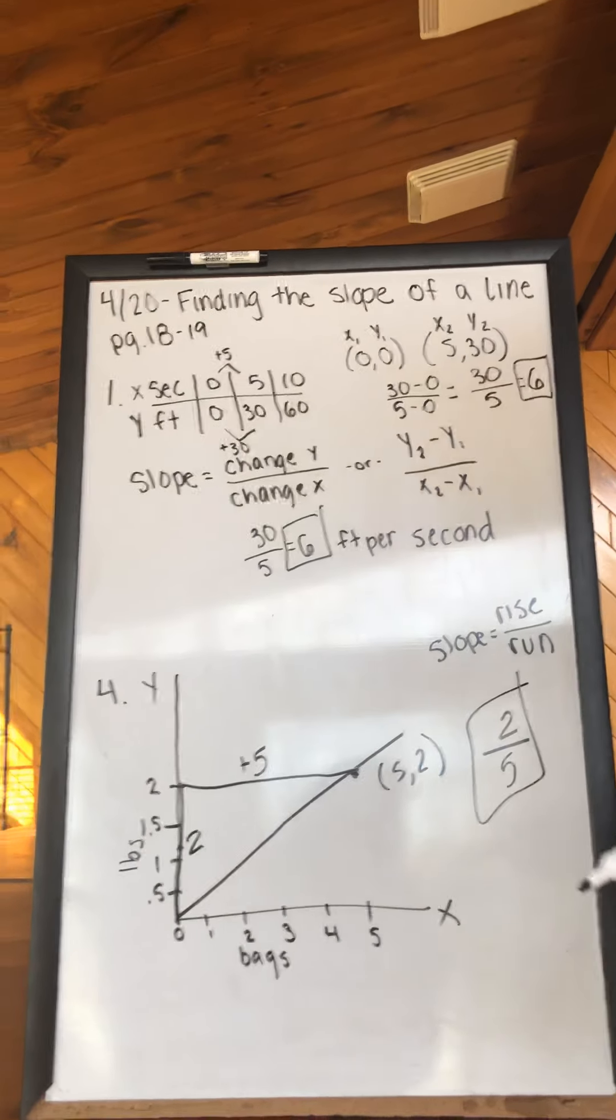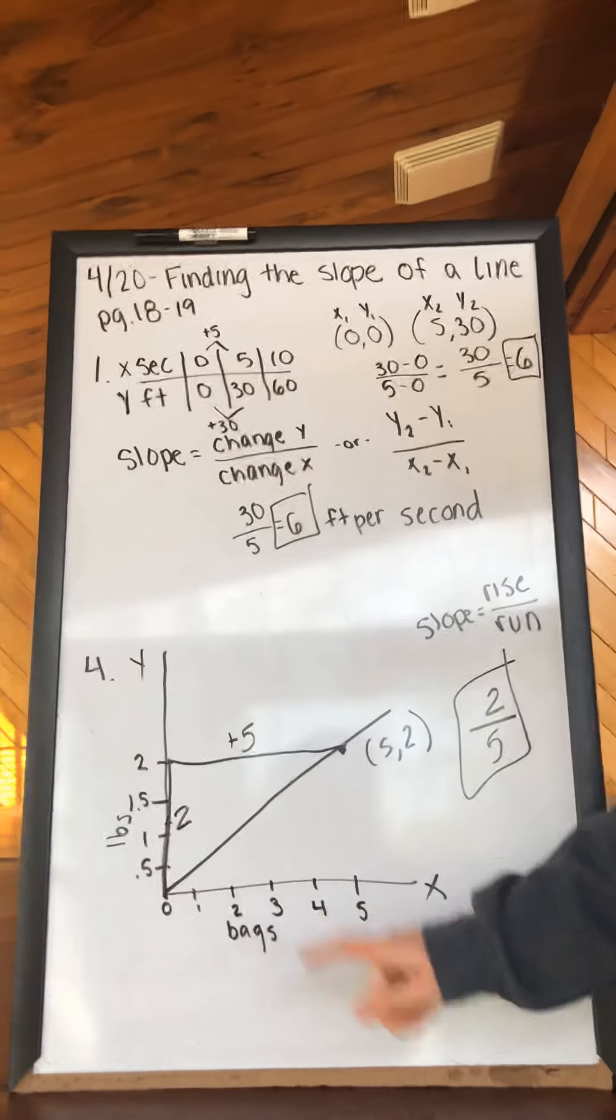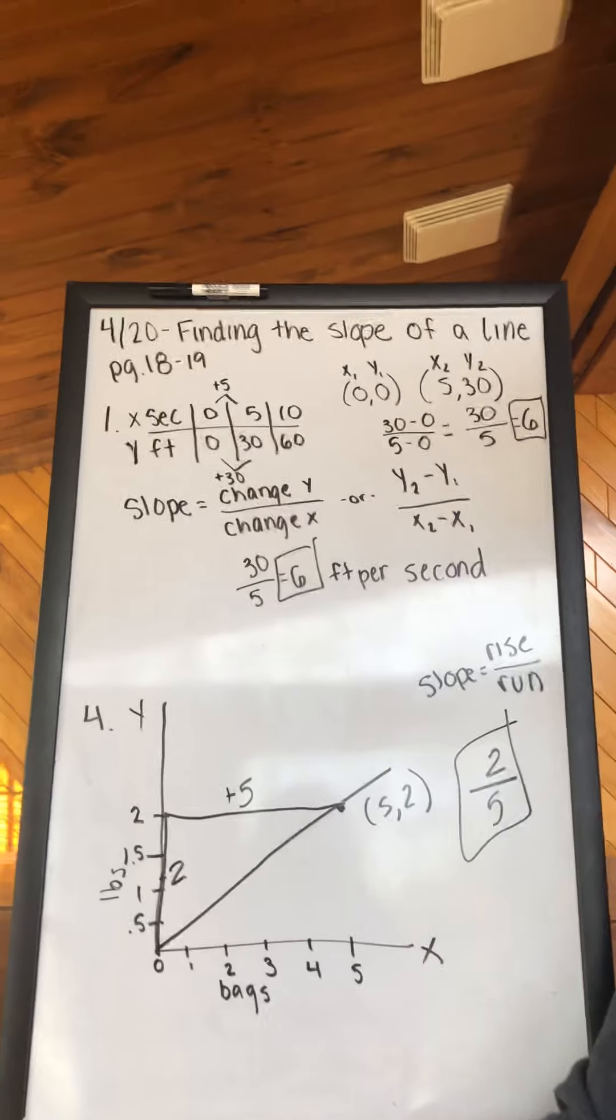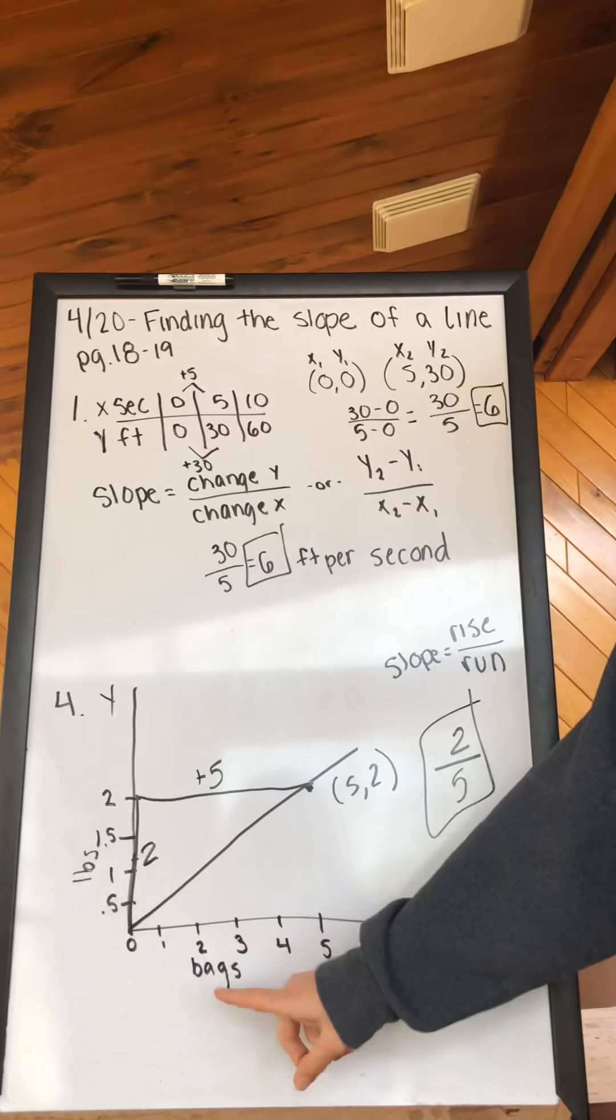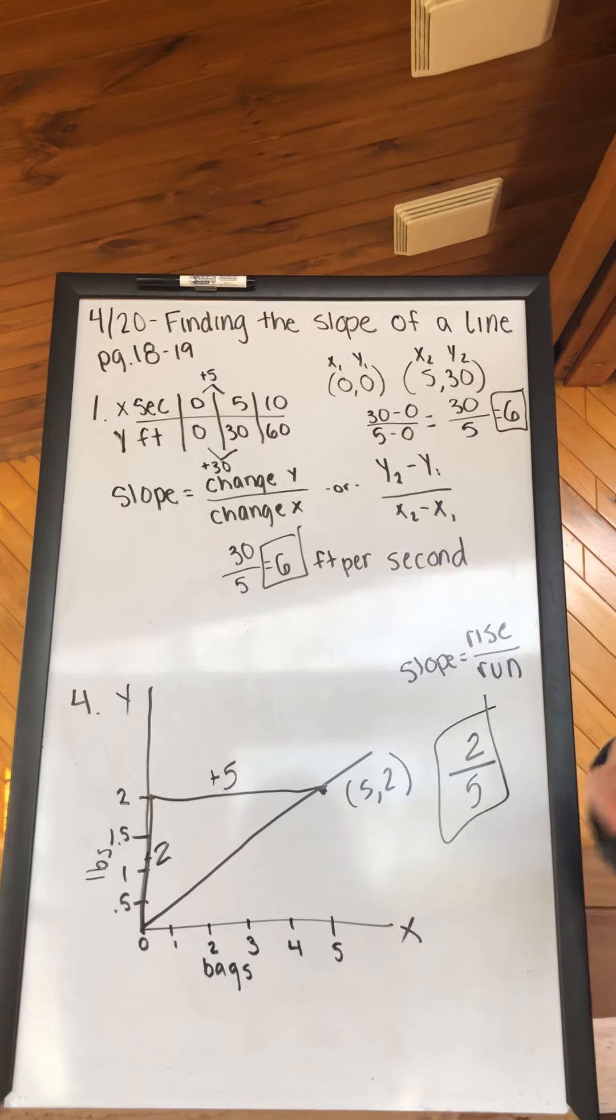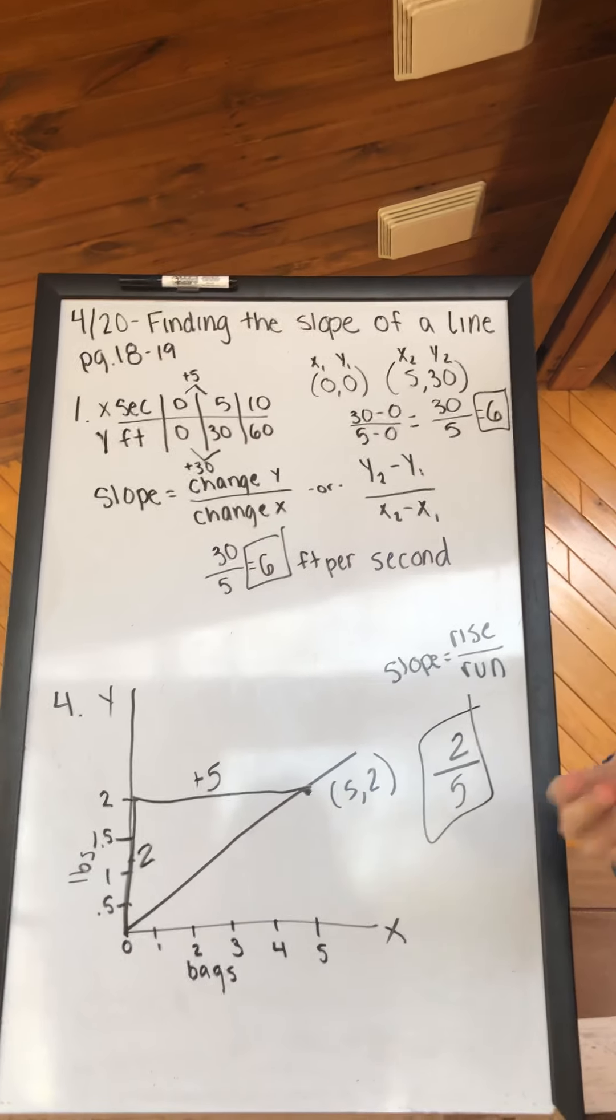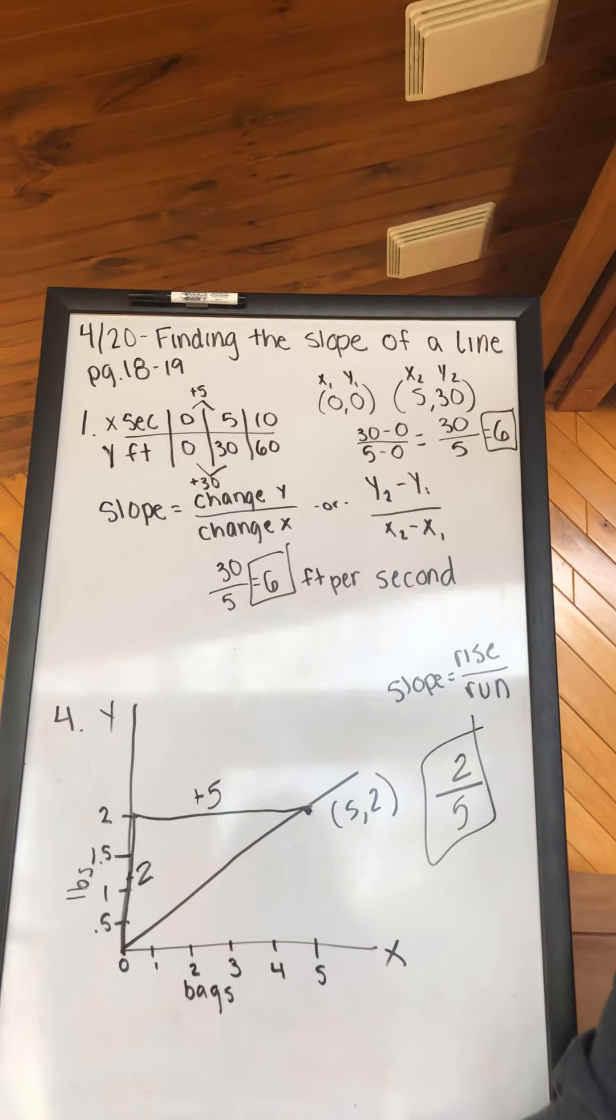That is the pound per bag. So when it asks to state what the slope represents for number 4, it is pound per bag. Keywords like 'each' and 'per' will give away what the slope is.